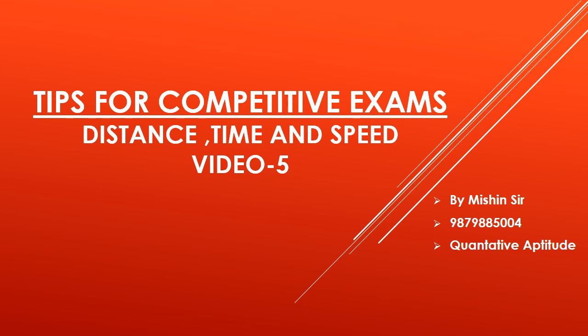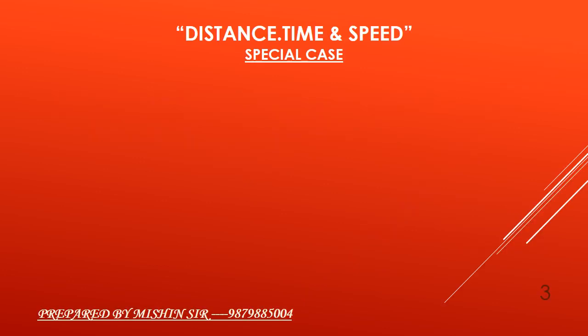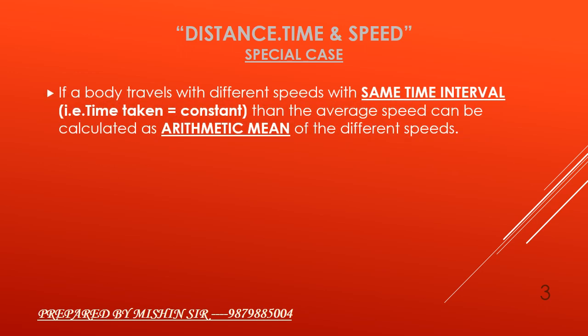Now we move to the topic distance, time and speed. Today we are going to learn a special case: if a body travels with different speeds with same time interval, that is time taken is constant, then the average speed can be calculated as arithmetic mean of the different speeds.